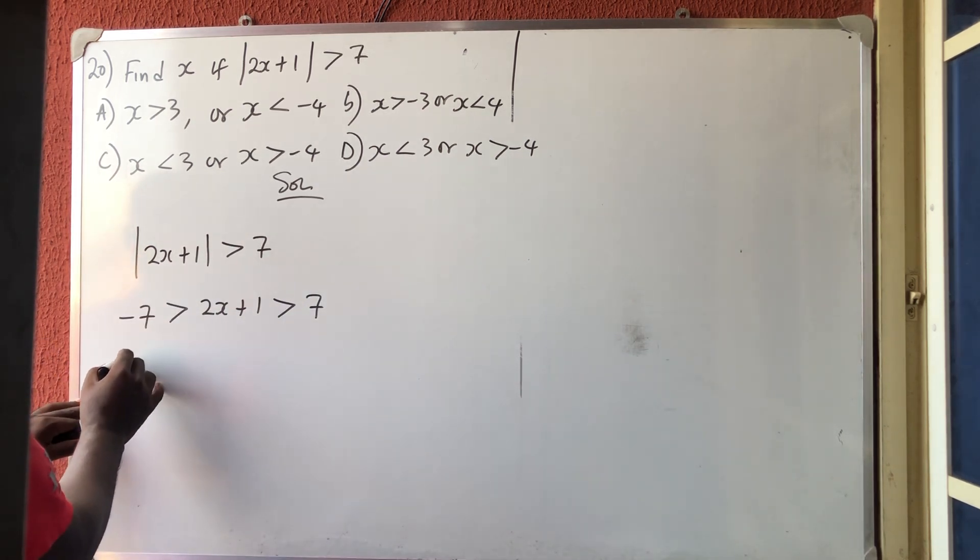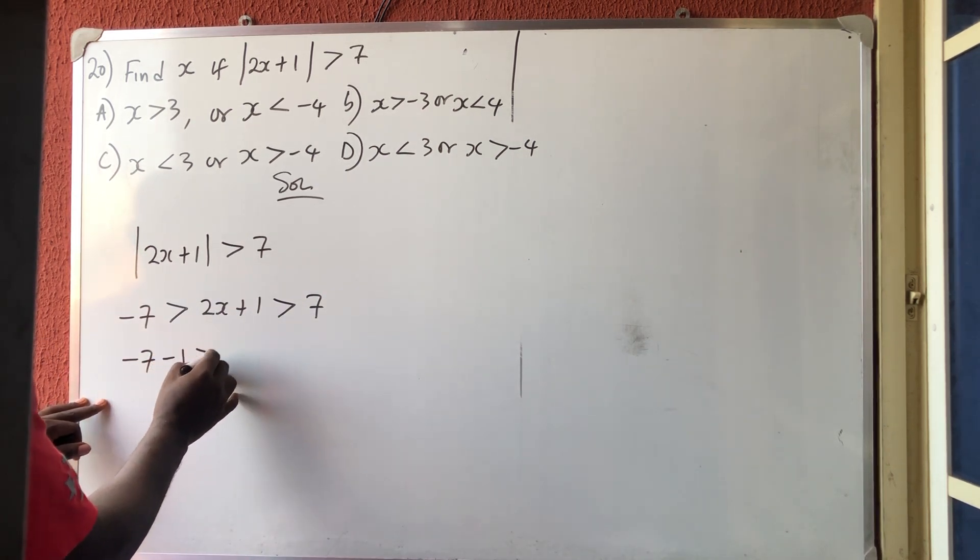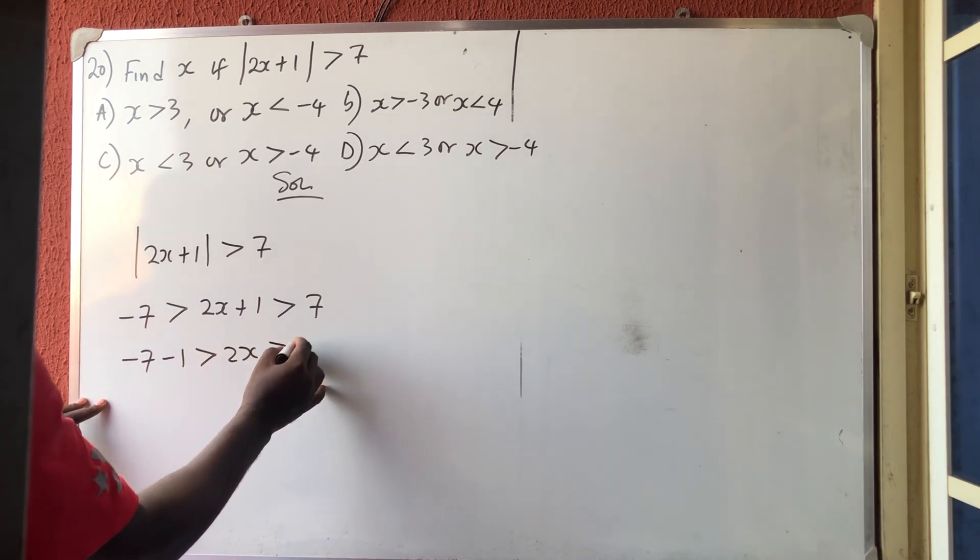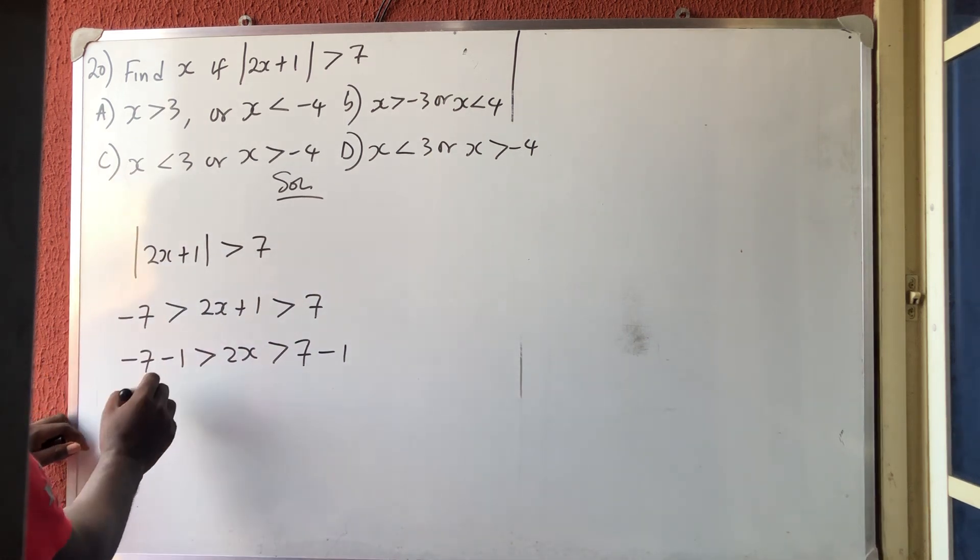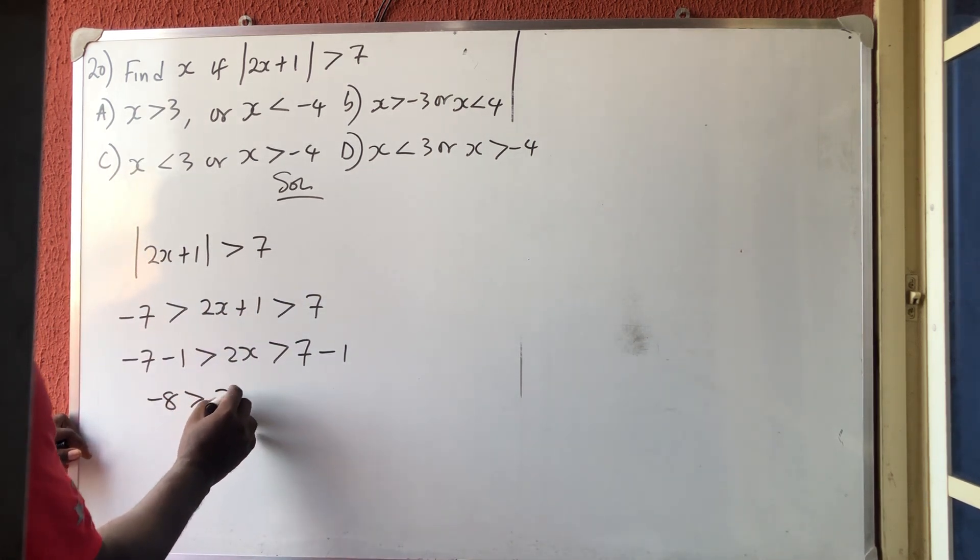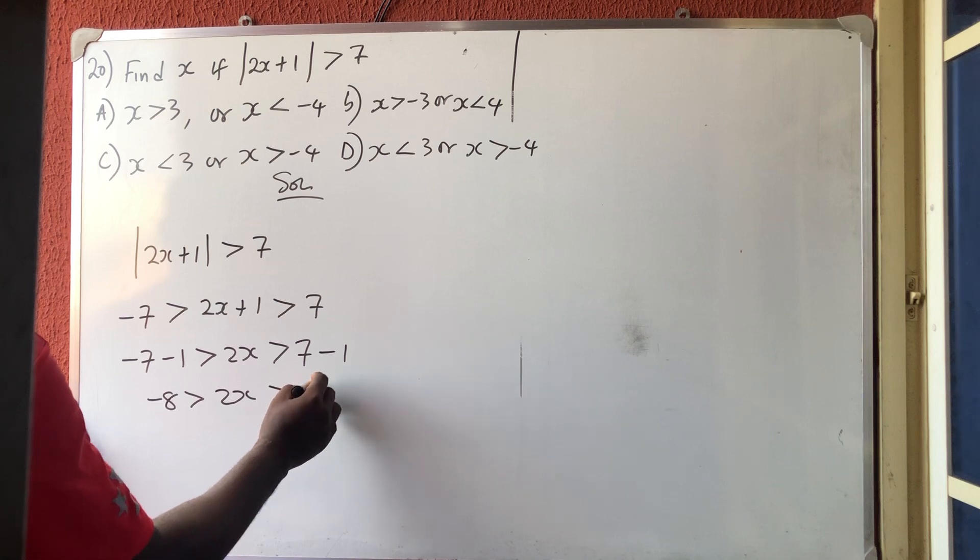So if you do the math, you are going to have minus 7 minus 1 is greater than 2x, which is greater than 7 minus 1. This one will move here and equally move here. I'm going to have that minus 8 is greater than 2x, which is greater than 6.